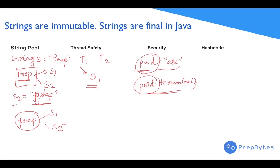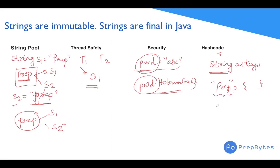We also have hash code as a reason. In maps, we generally use strings as keys. These strings are converted into hash codes and cached for faster operations. If we create a map with key 'prep', the hash code of 'prep' is cached so the next lookup is faster. If we try to change this value, the hash code would change and lead to unwanted results. These are the reasons why it makes sense to have strings as immutable in Java.